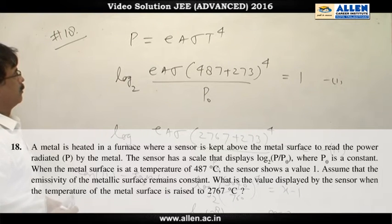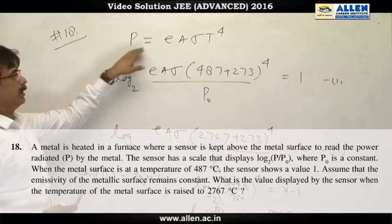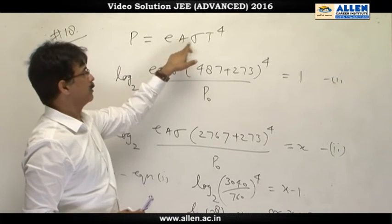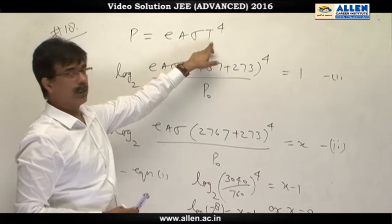Question number 18, power radiated is given by Stefan's law. E is emissivity, A is surface area, Stefan's constant and absolute temperature in Kelvin.